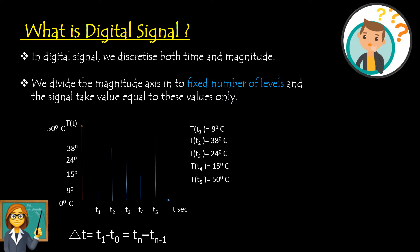Now, if I want to convert this into a digital signal, I have to discretize the magnitude axis as well. The magnitude axis here represents temperature. I need to fix certain values of temperature as a fixed number of levels, so that other values are not allowed. I am introducing 3 intermediate temperatures between the lower and higher values. The permissible temperature levels will be: 0°C, 15°C, 30°C, 45°C, and 50°C.